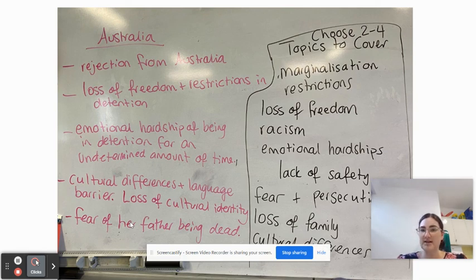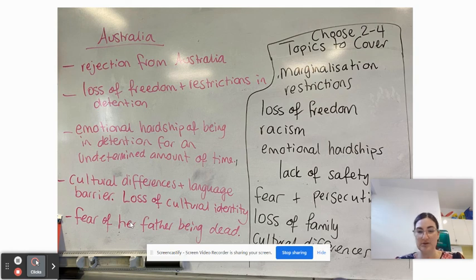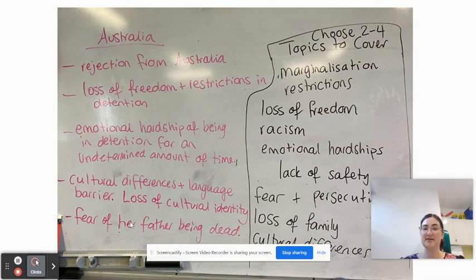On the right-hand side of the screen, these are some of the things I want you to discuss in your body paragraphs, which have been drawn from the brainstorm. You should be talking about marginalization, restrictions, loss of freedom, emotional hardships, lack of safety, racism, fear and persecution, loss of family, and cultural differences. You have to prove whether the characters experience these things, and if they did, whether those experiences constitute marginalization or not.